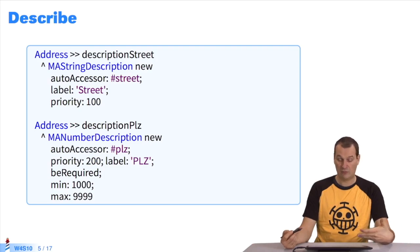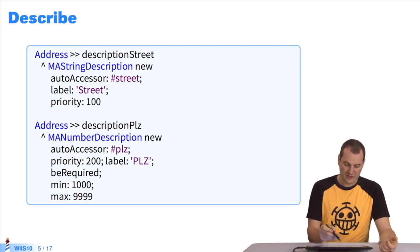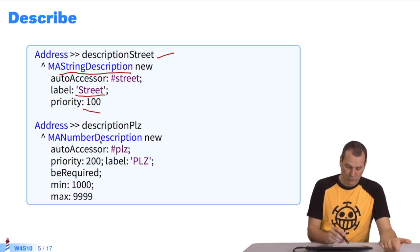Once that's done, what can we do with Magritte? Here is how the address is described in Pharo. We'll define a description street as a string description with such and such a label and priority. For street numbers, I define a number description. I assign a different priority and label.